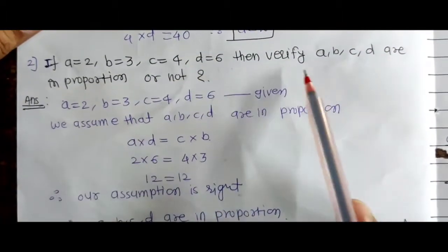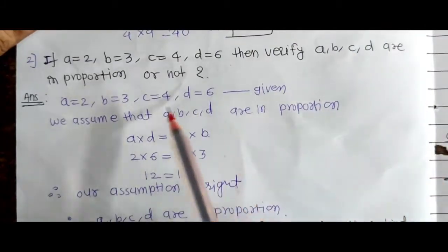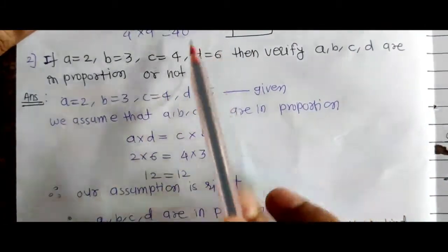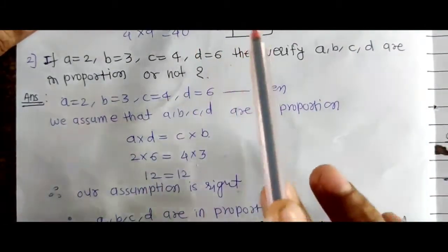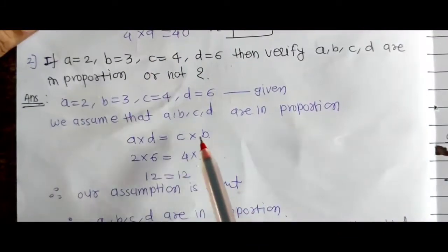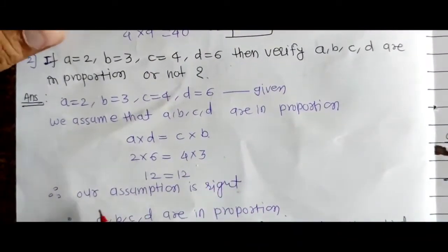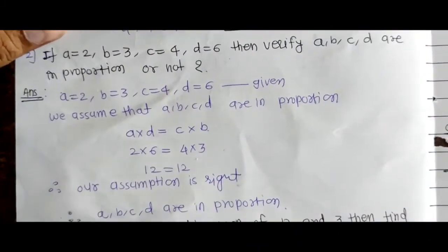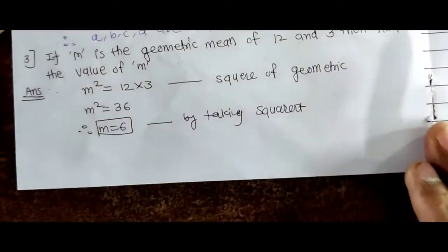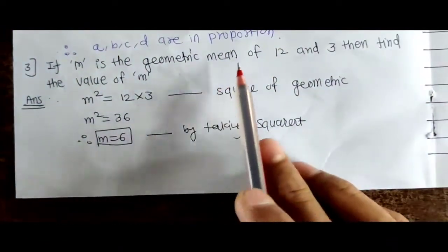Second question: a equals 2, b equals 3, c equals 4, d equals 6 — then verify whether a, b, c, d are in proportion or not. Same formula apply karte hain: a cross d equal to b cross c. Dekho, 12 equal to 12 aa gaya hai, toh main bol sakta hoon a, b, c, d are in proportion.